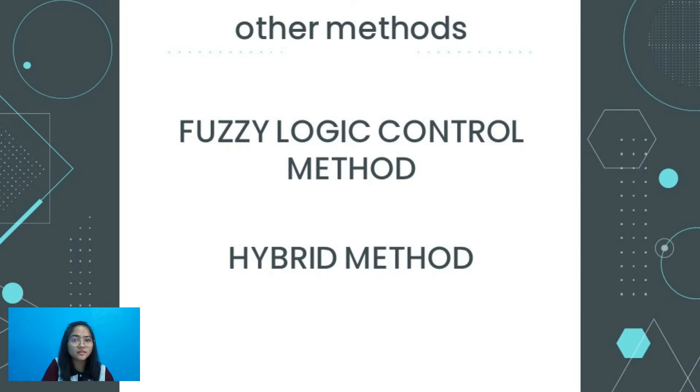There are still other methods including the fuzzy logic control method and the hybrid method. The fuzzy logic control method has the advantages of fast convergence, parameter insensitivity, and acceptance of noisy and inaccurate signals. The hybrid method is a combination of two methods that exploits the advantages of one technique to overcome the disadvantage of another.